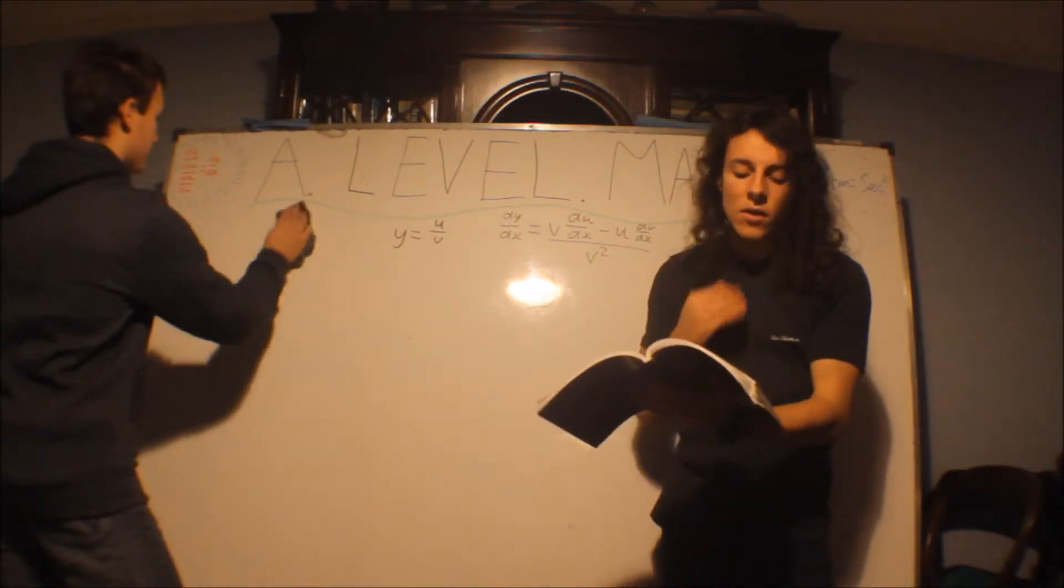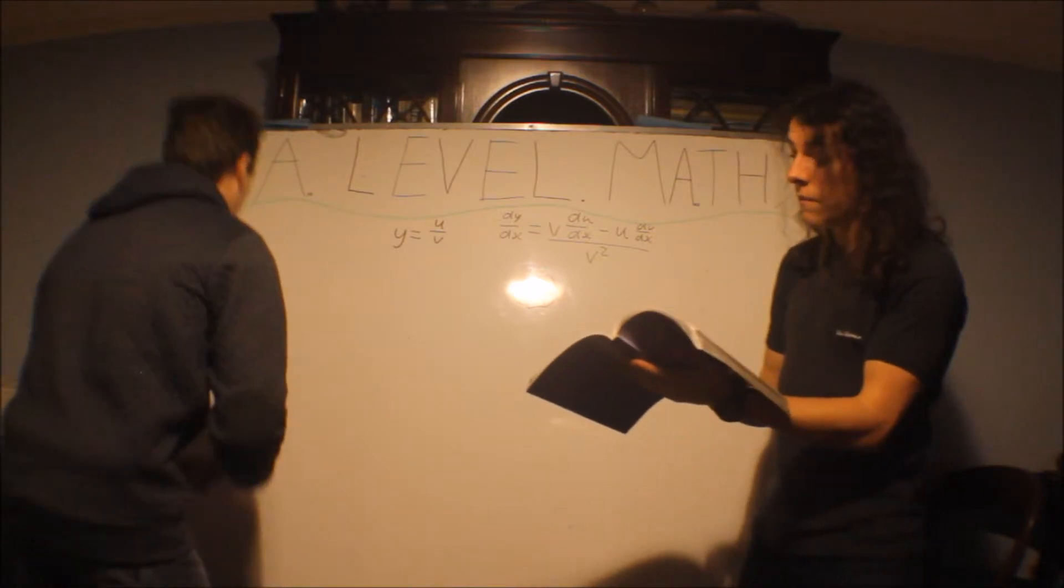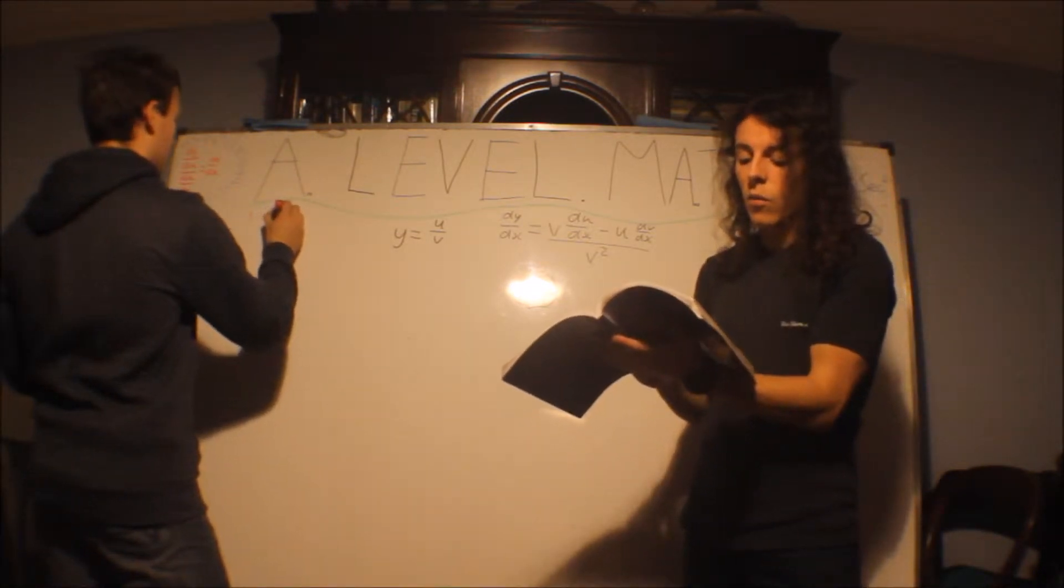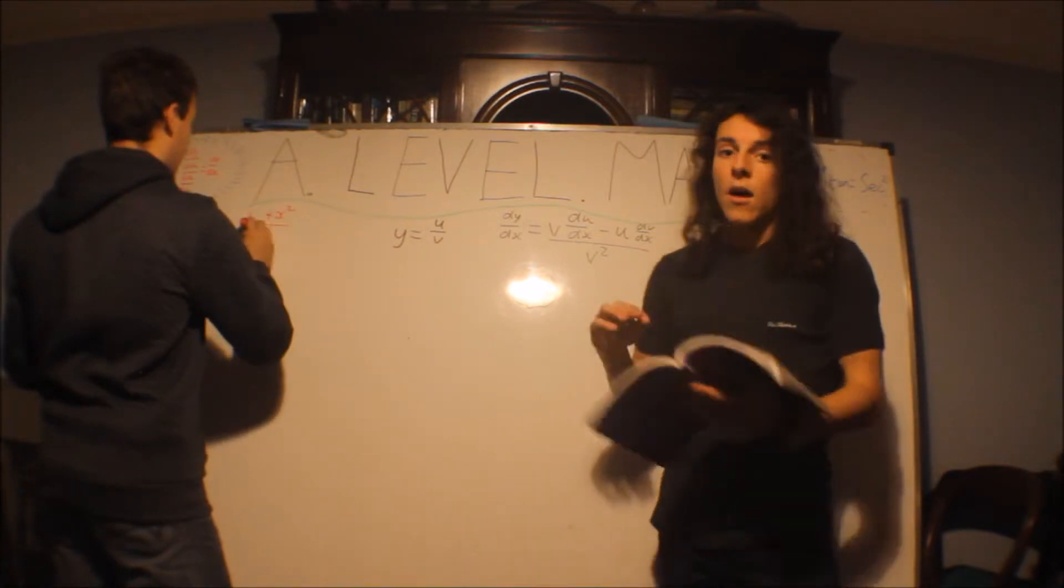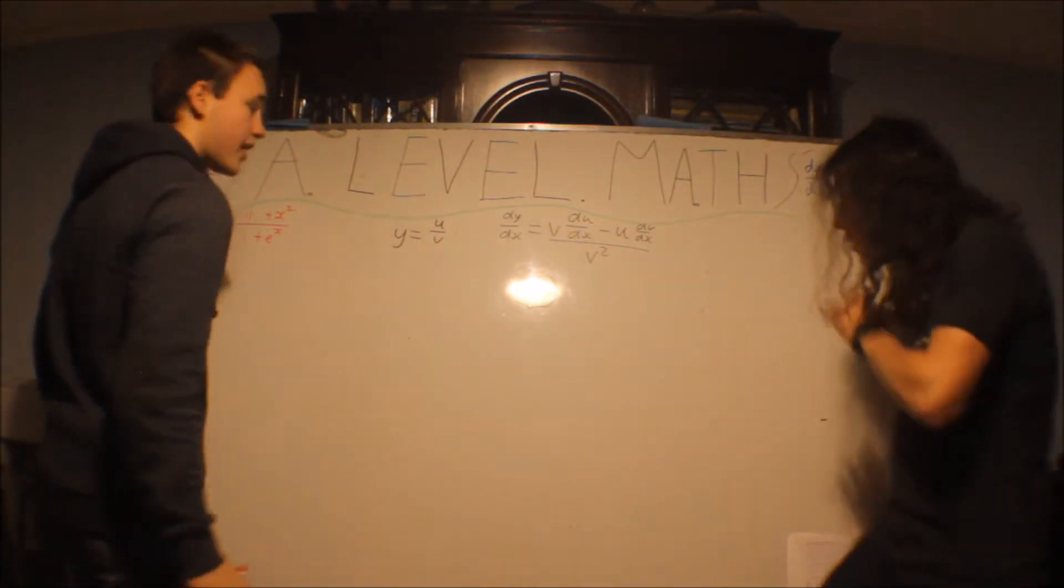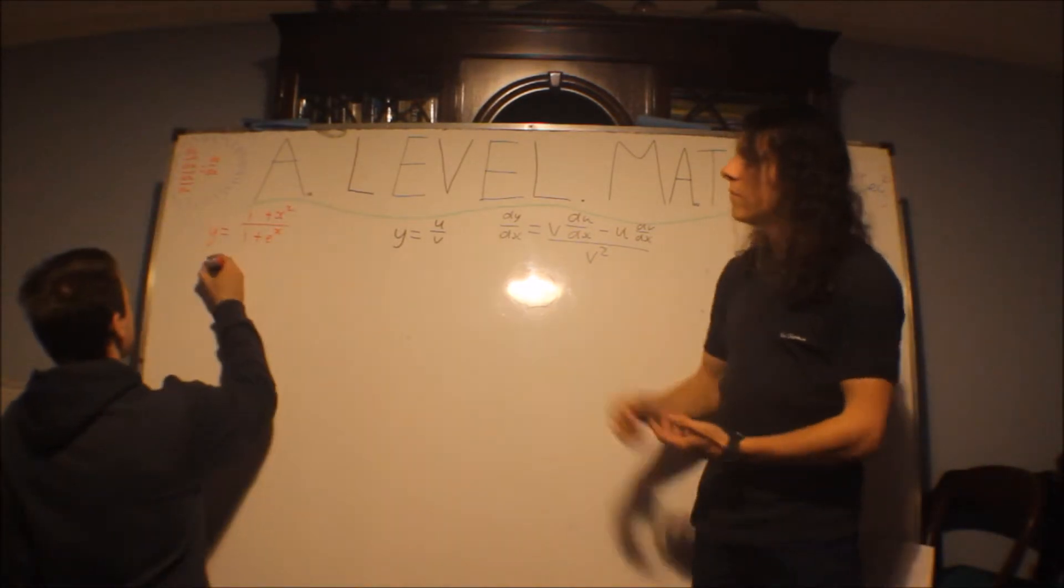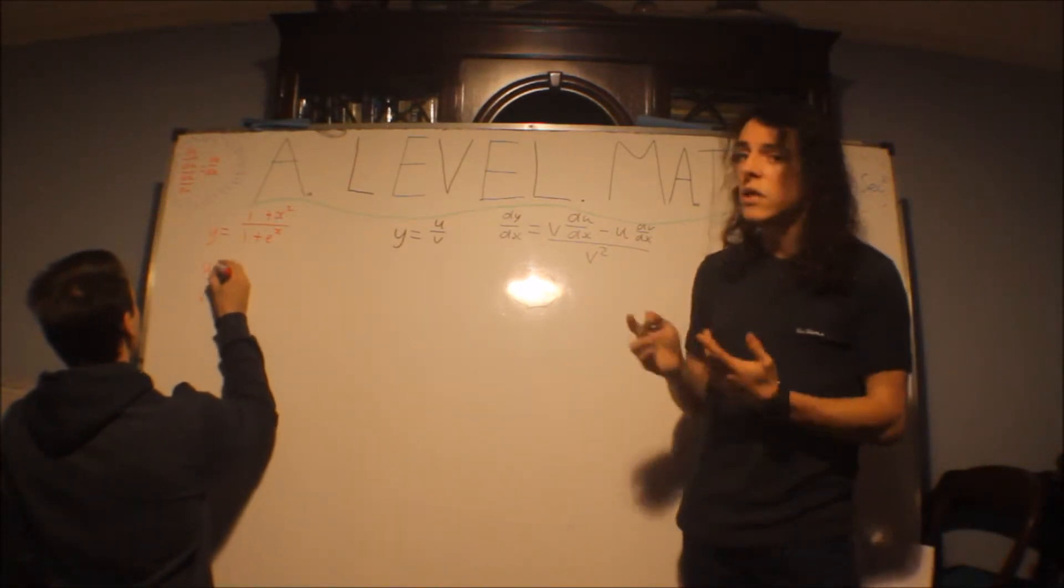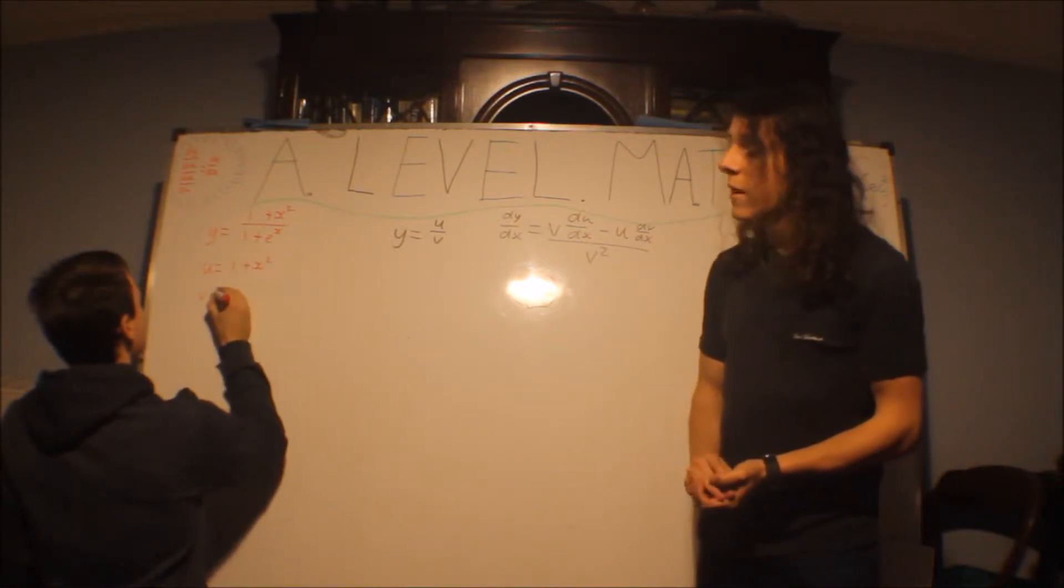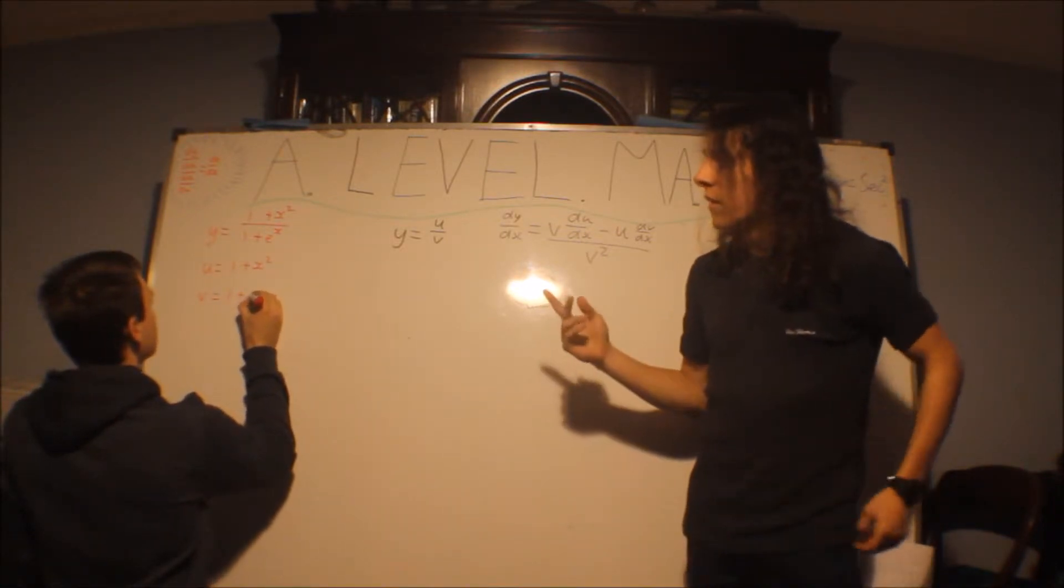So we have, given that, you ready? I'm ready. Y equals one plus x squared over one plus e to the x. Find dy by dx, just differentiate it, that's what we're going to do. So first you have to write what your u and v are. You can't choose them like the product rule because they have to be this way around. So our u is one plus x squared and our v is one plus e to the x.